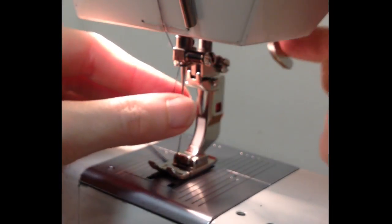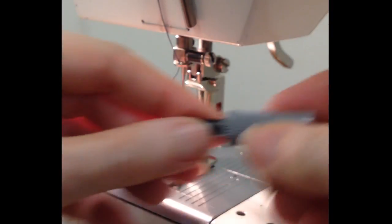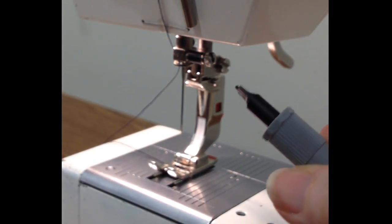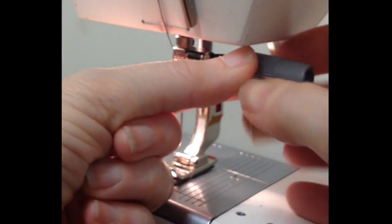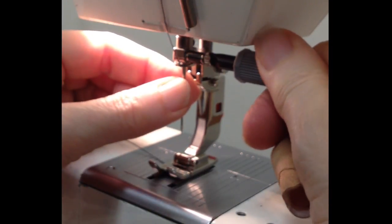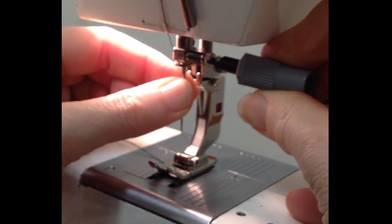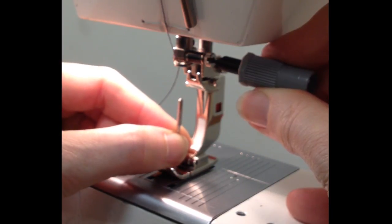To change the needle you want to unthread it, get the thread out of the way. This is the screwdriver that's appropriate for this screw that's on the right side of the needle. Hold the needle while you loosen the screw so that the needle doesn't drop down into the mechanism of the machine.